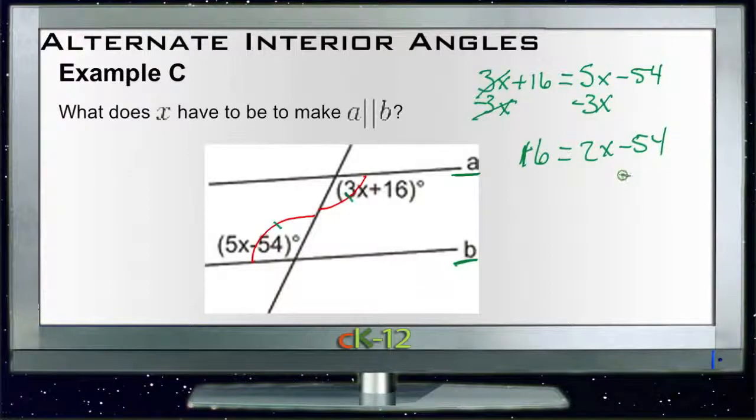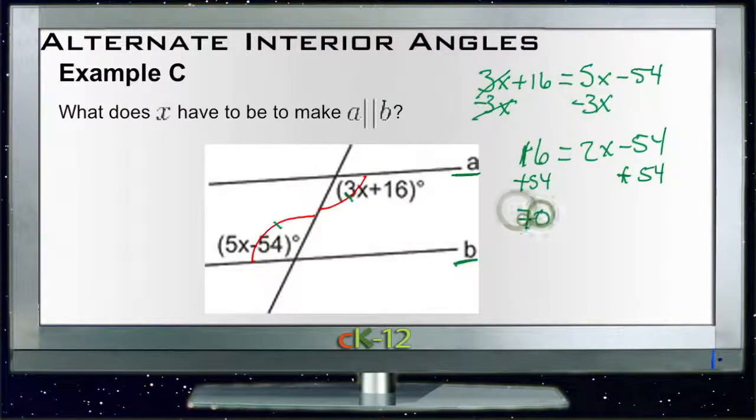We'll add 54 to both sides. Plus 54, 54 plus 54. So over here on the left, we get 54, 60, 70. And over here on the right, we have 2x.